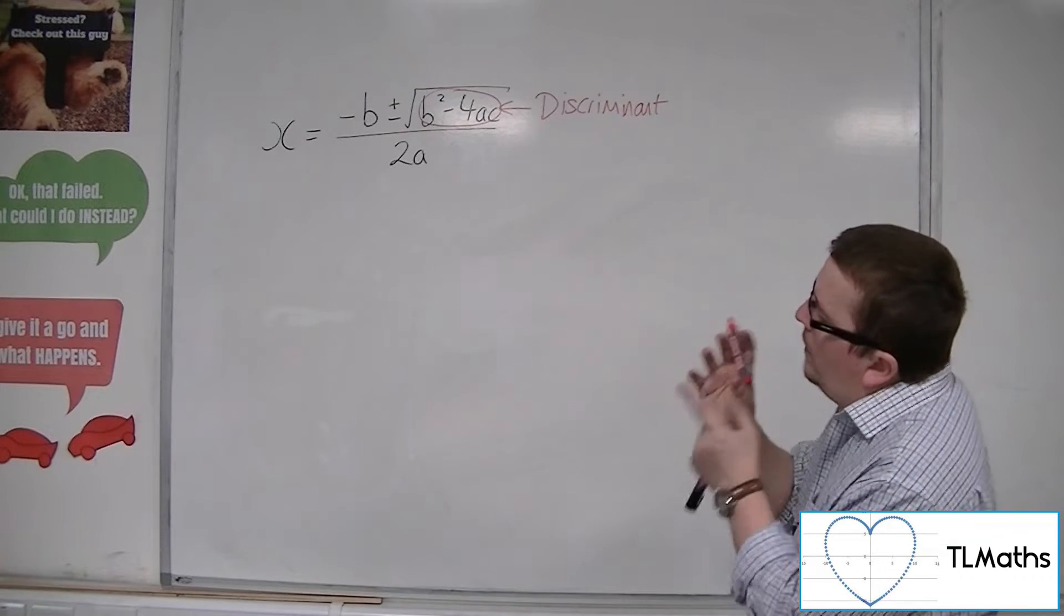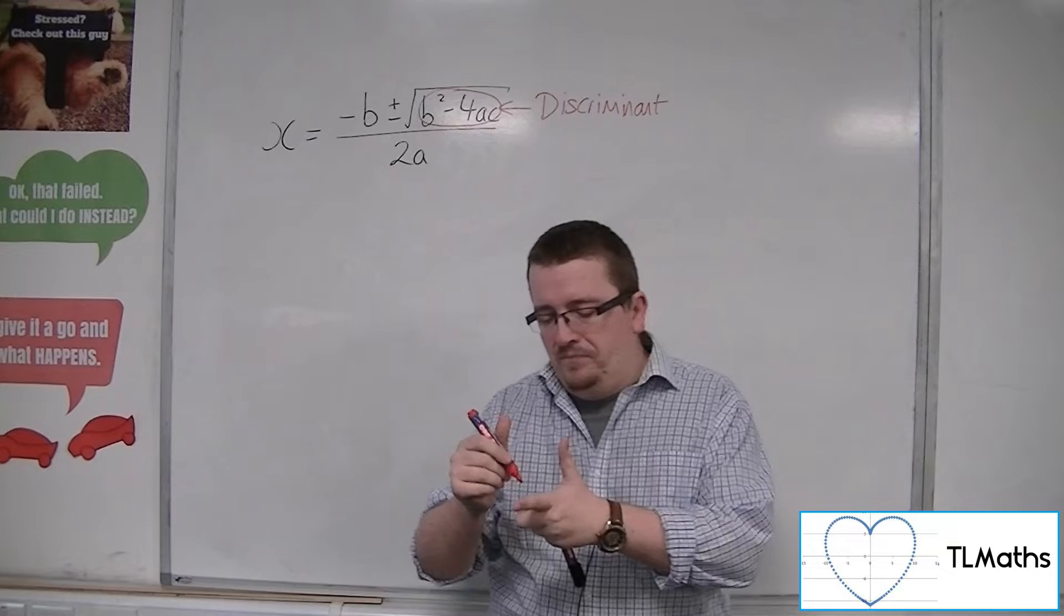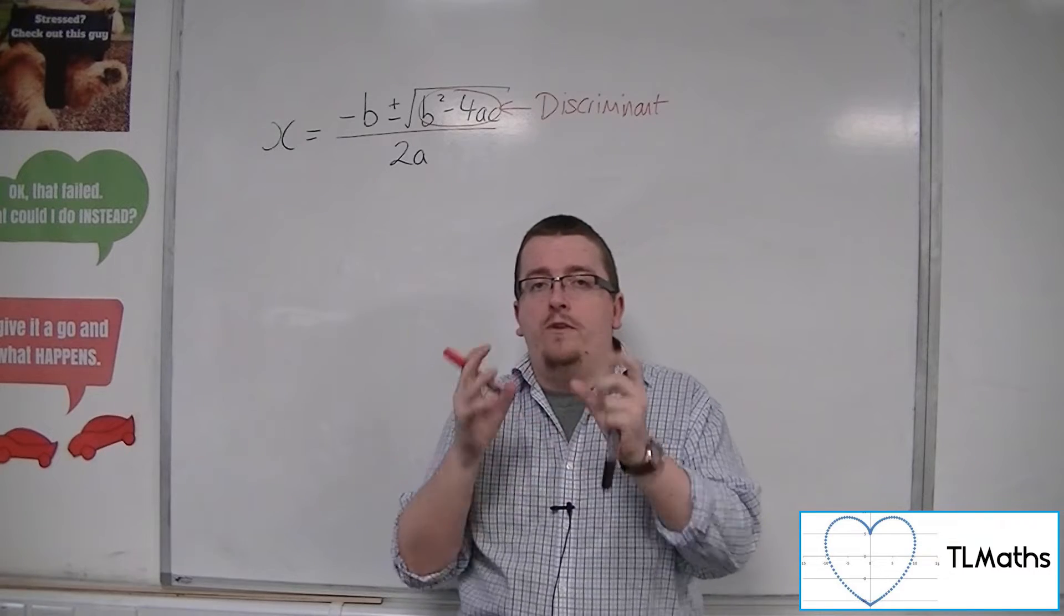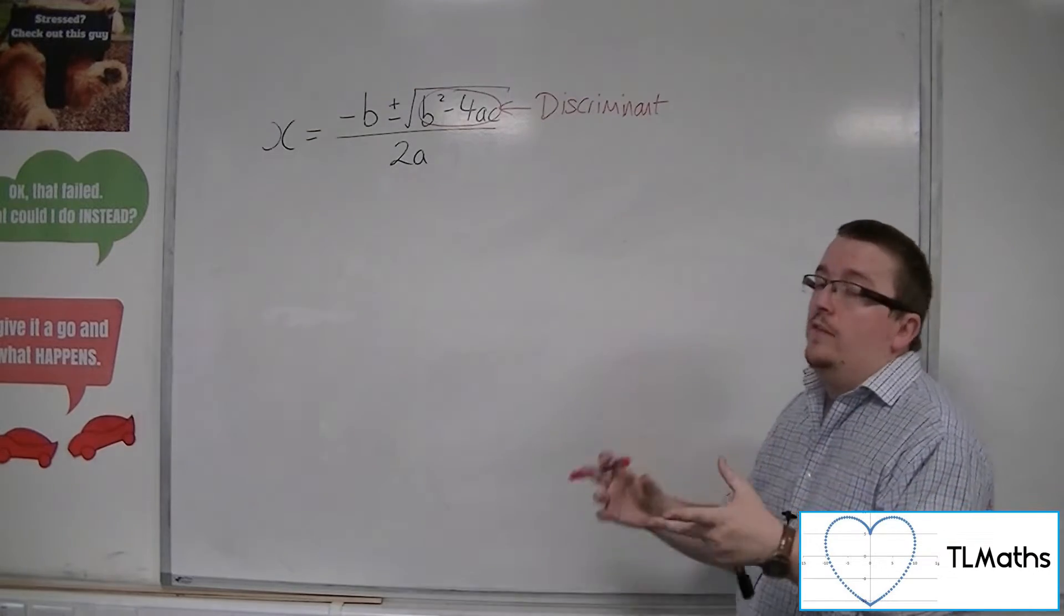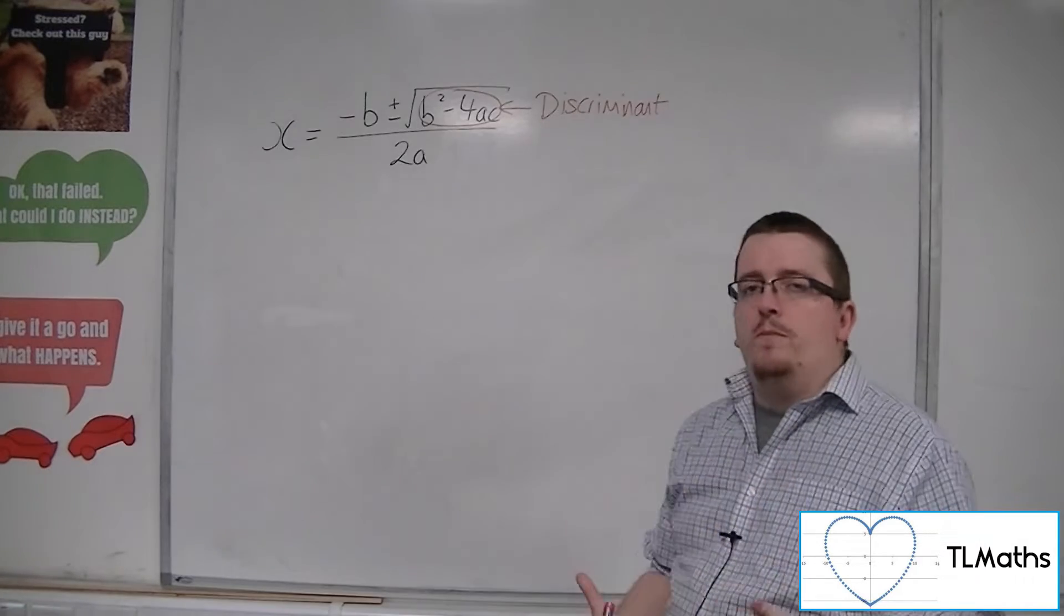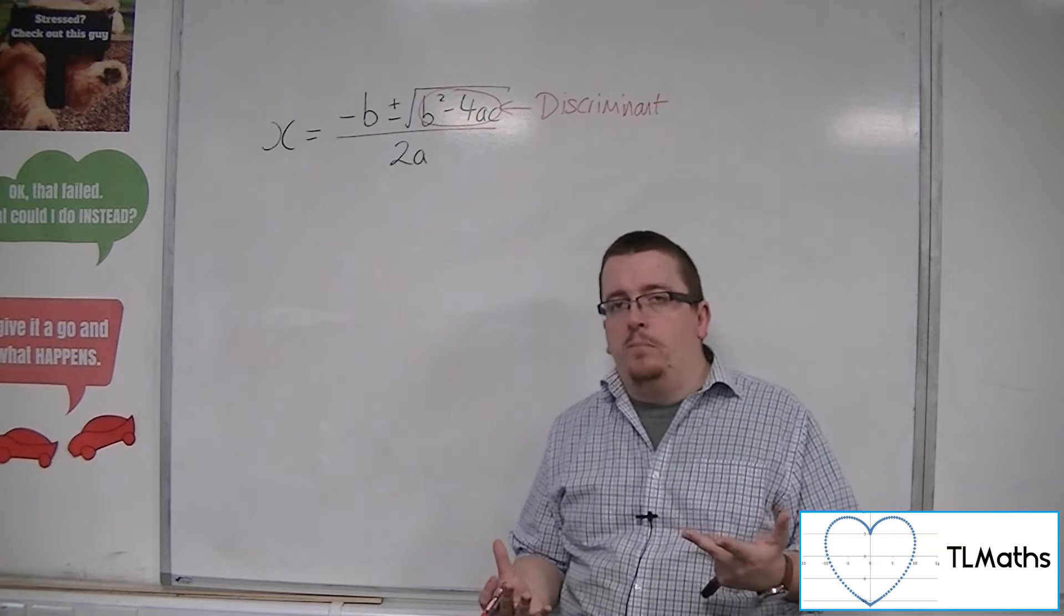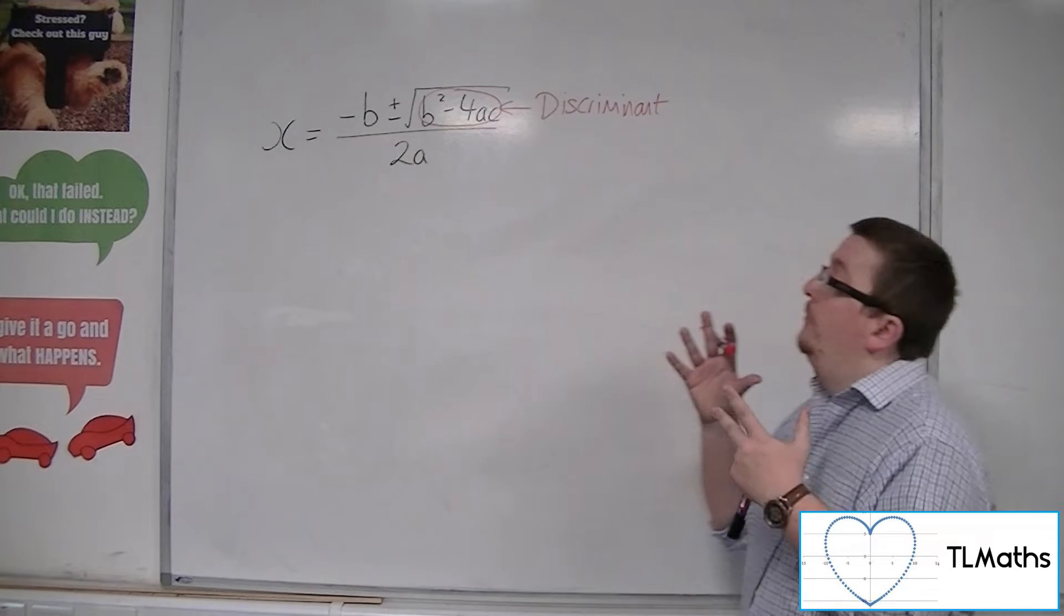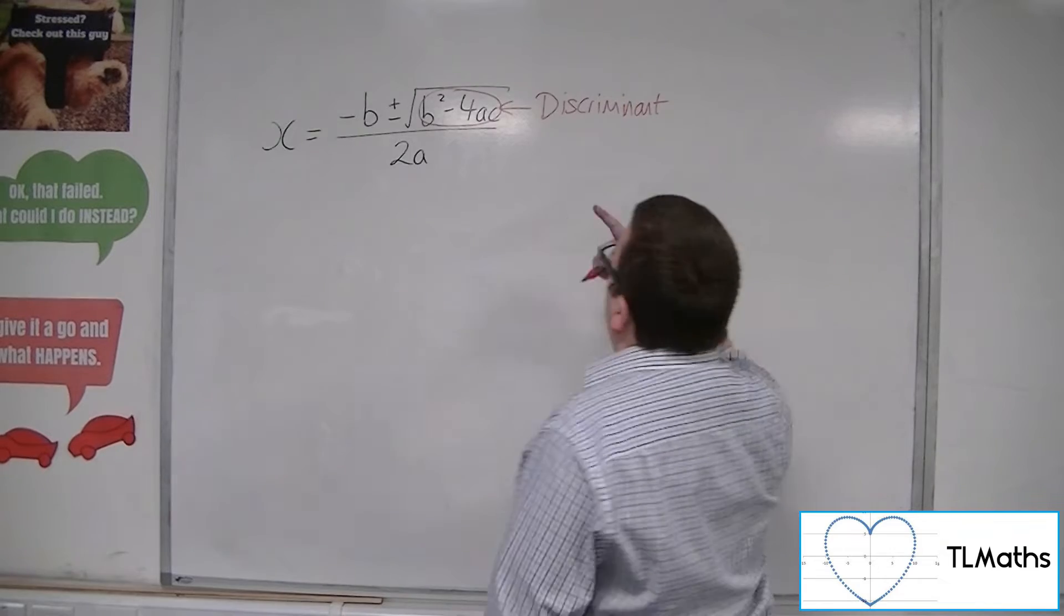Now the reason why that's so important is really down to that square root, because you can only square root particular numbers. You can only square root numbers that are greater than or equal to 0. So if that discriminant were ever to become negative, then we would hit problems, because we would not be able to square root it.